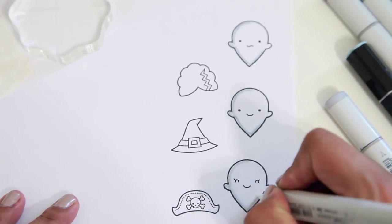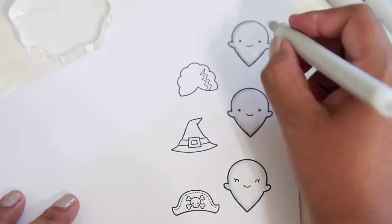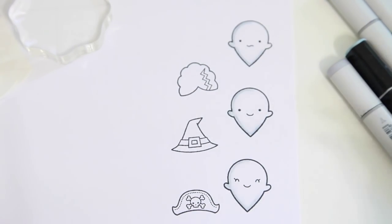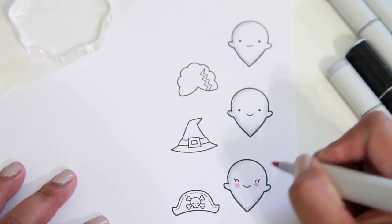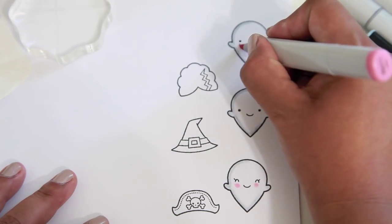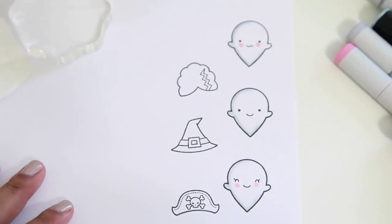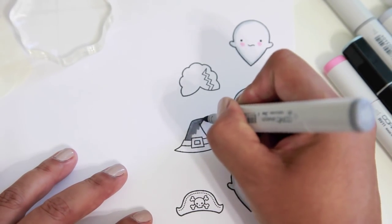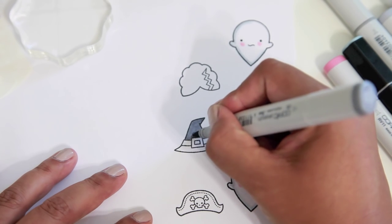And now I'm just going to take my clear blender and try to just blend that in a little bit. I'm going to go ahead and add some cheeks. I think that's really cute. And then now I'm just going to go ahead and color in the rest of the images.